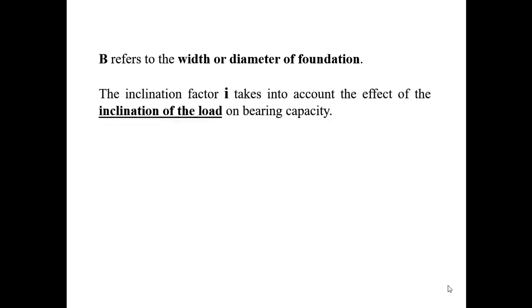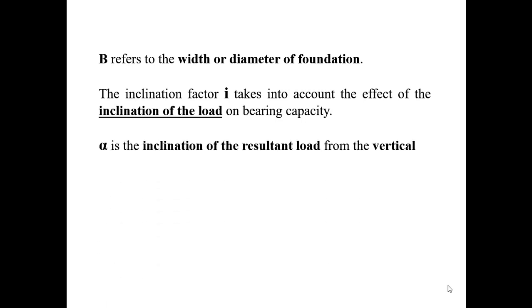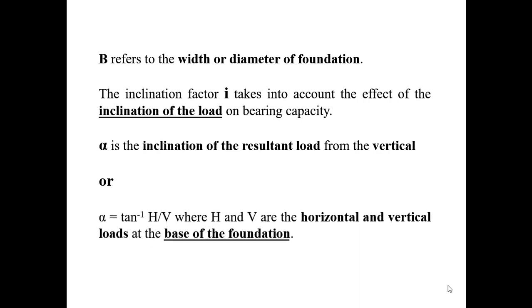In the equation, B refers to the width — whether the foundation is rectangular, square, or the diameter if the foundation is circular. The inclination factor i takes into account the effect of inclination of the load on the bearing capacity. Alpha is the inclination of the resultant load with the vertical, and it can be calculated using the equation: alpha = tan⁻¹(H/V), where H and V are the horizontal and vertical loads at the base of the footing.